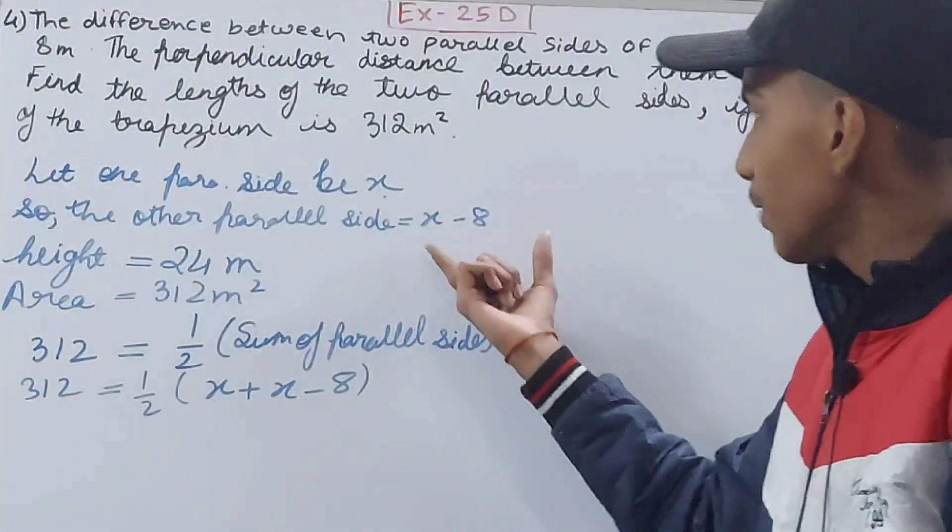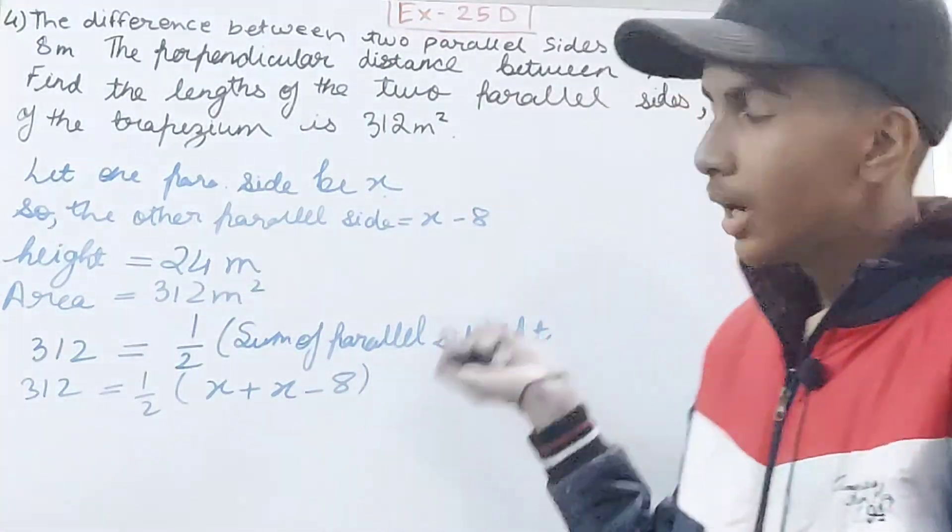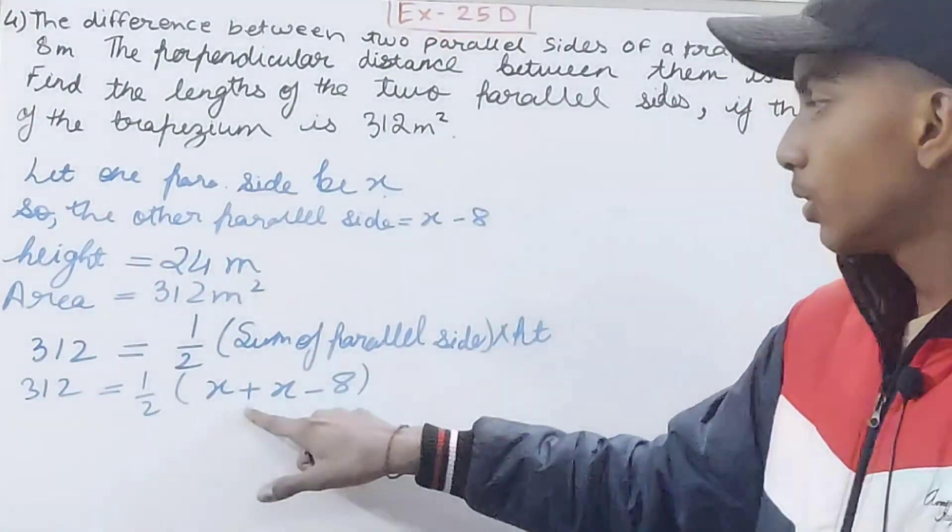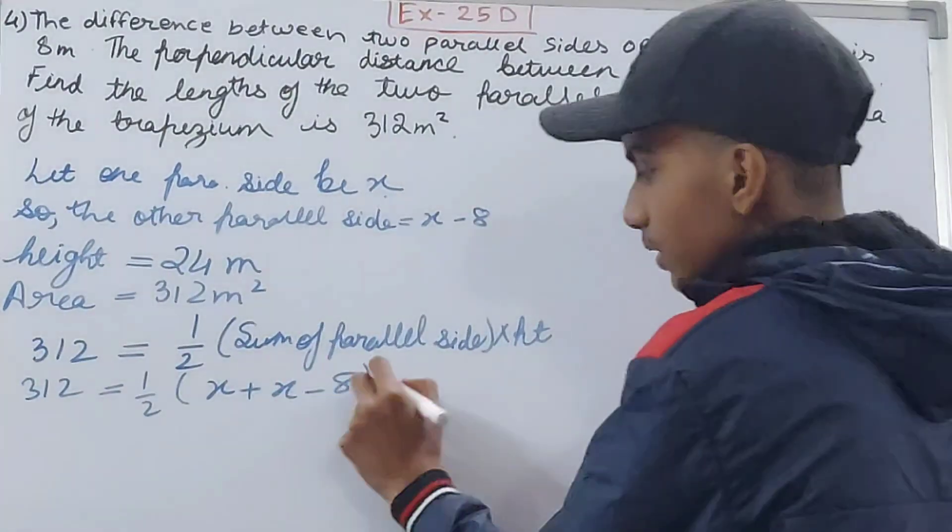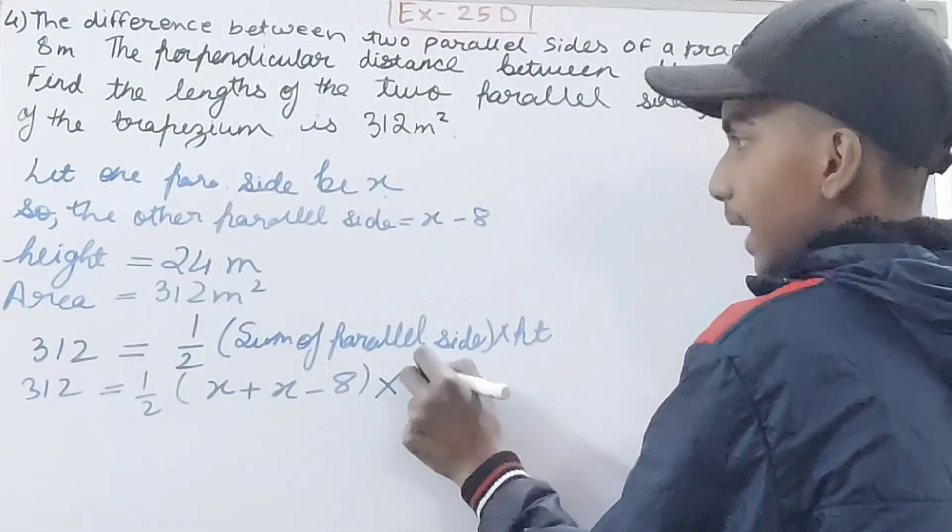X is the first parallel side, the second one was X minus 8. This is the sum, so in between I've put the plus sign. The height is 24.